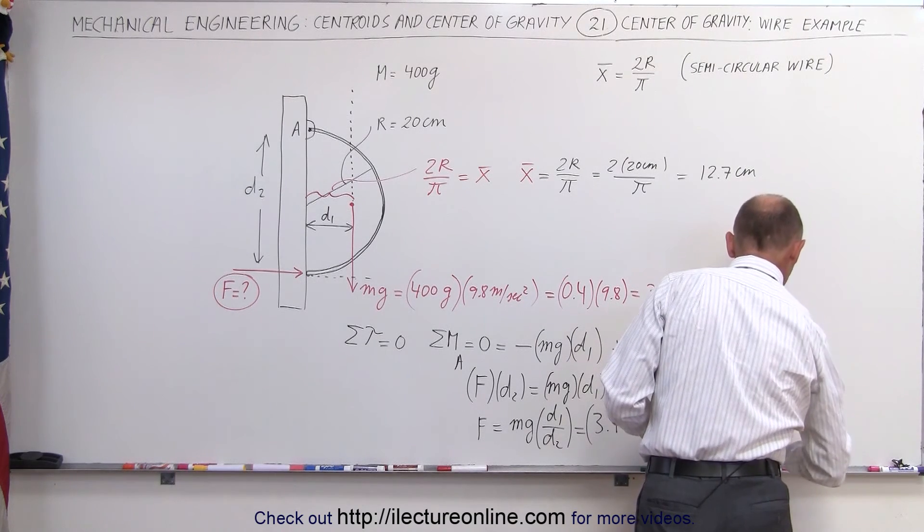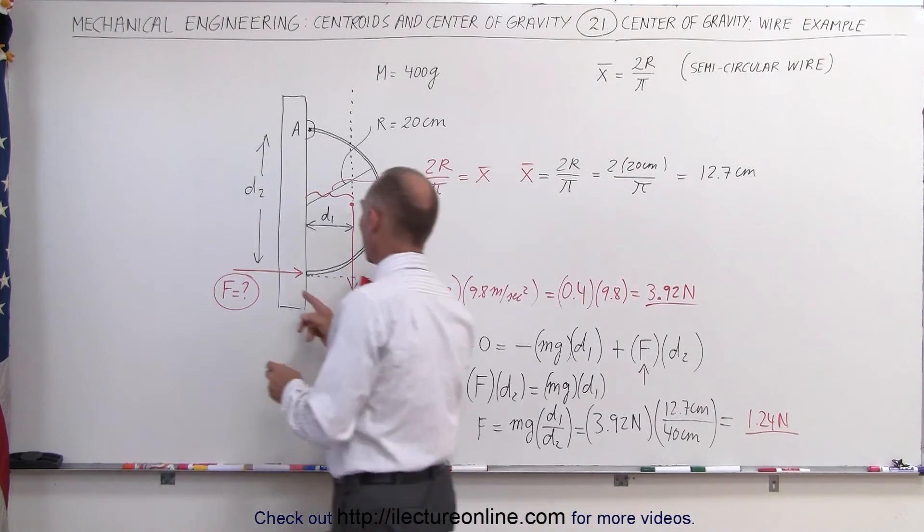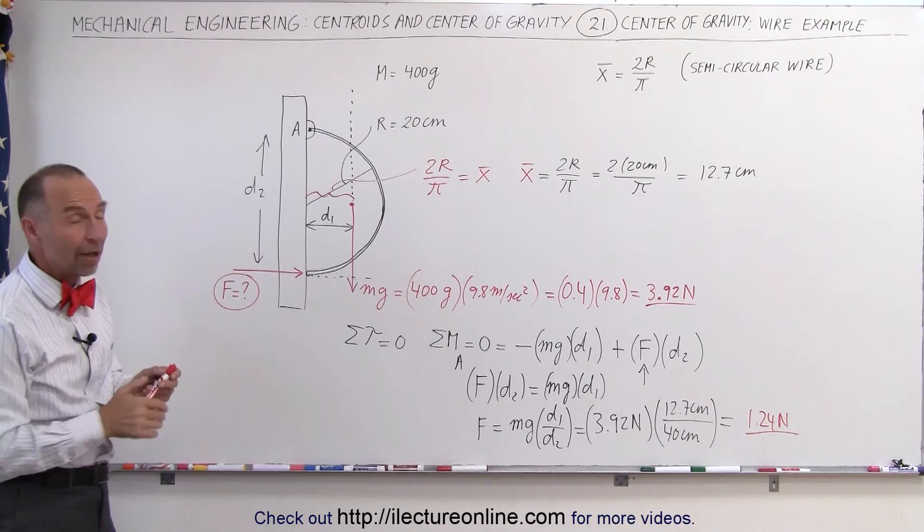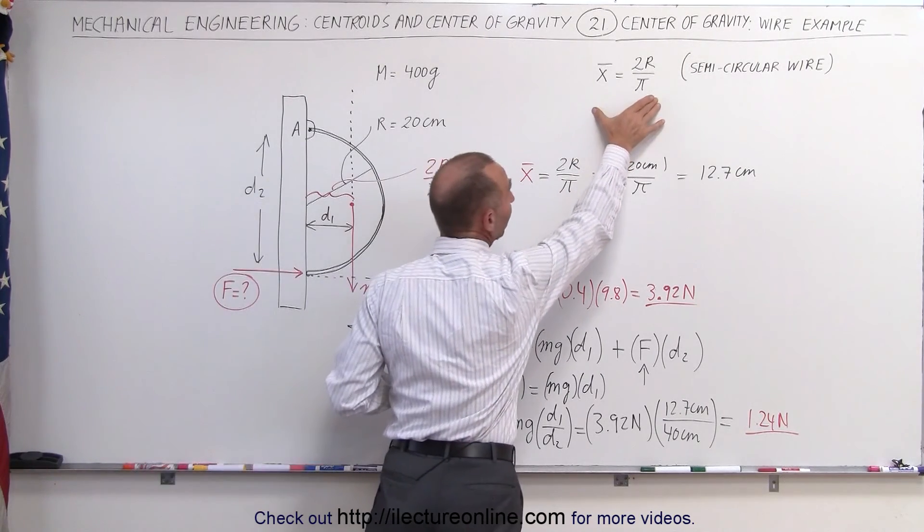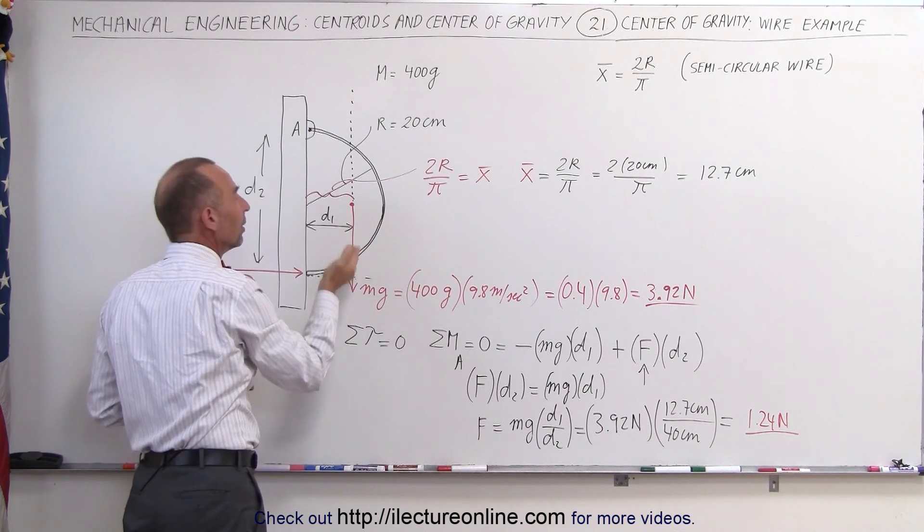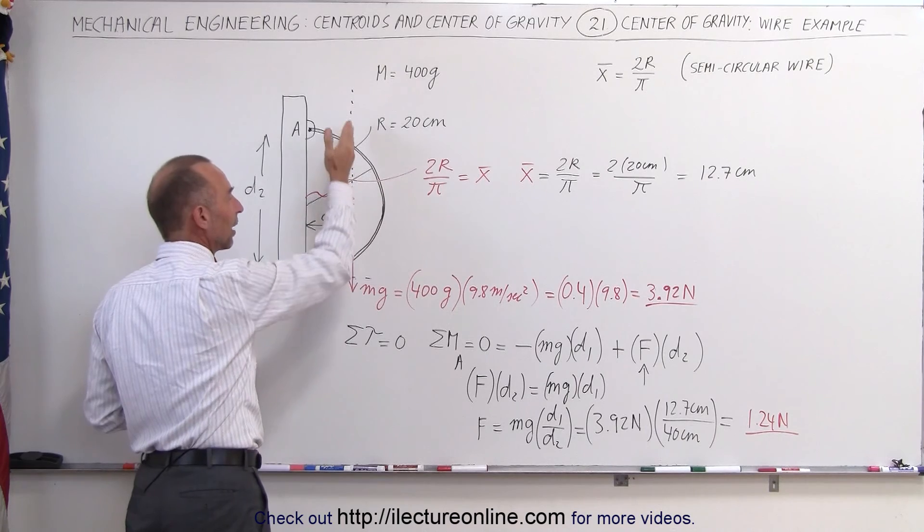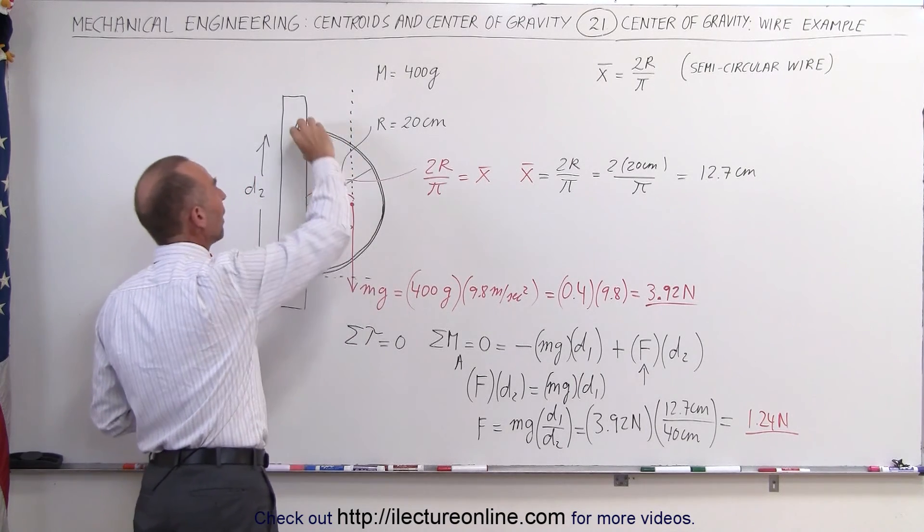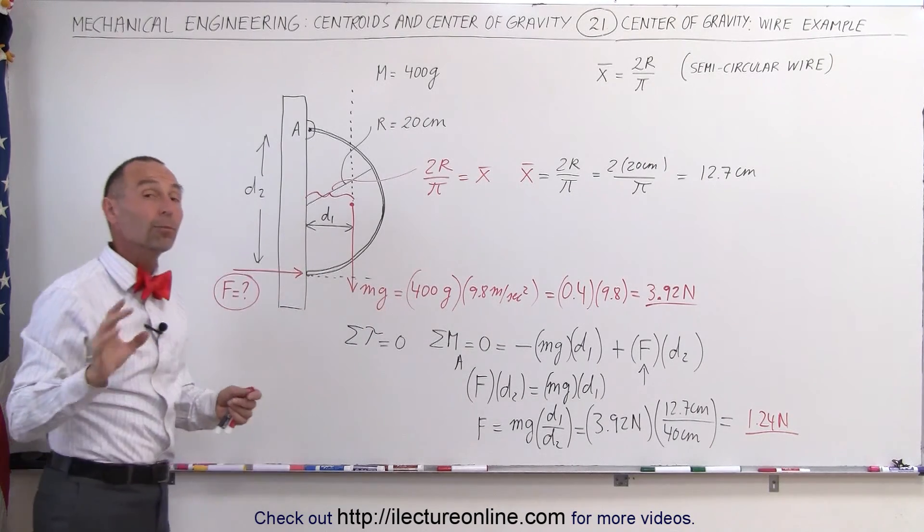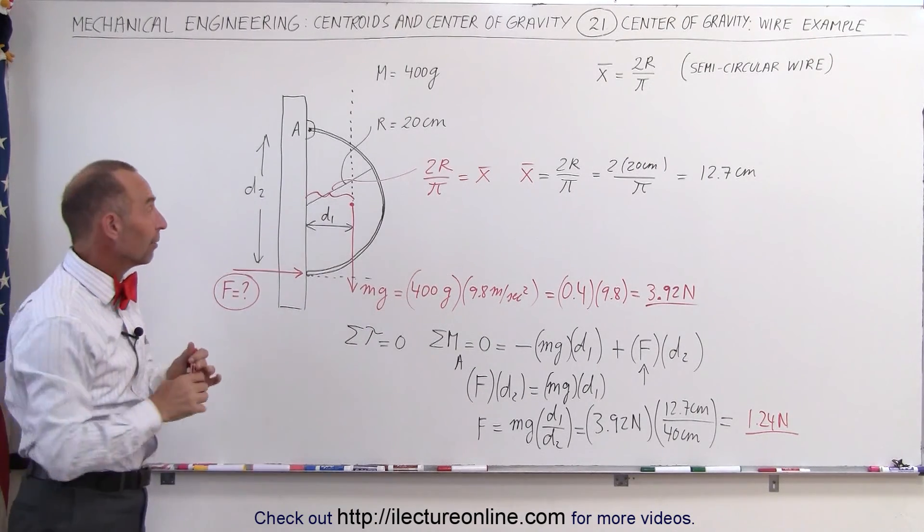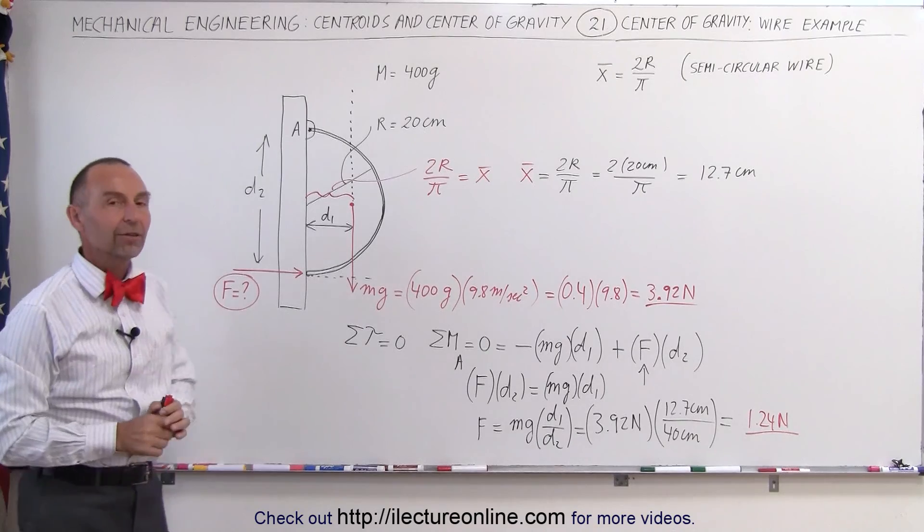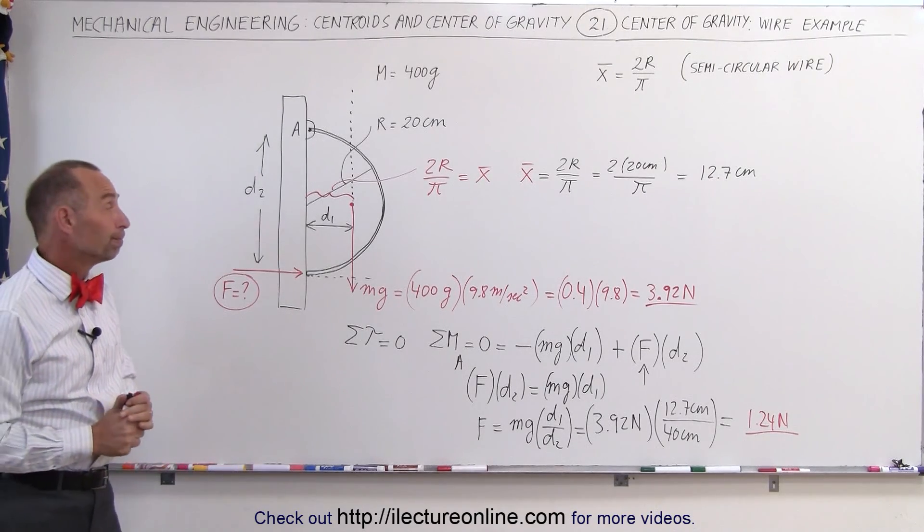1.24 newtons is the reactionary force of the post pushing back against wire, which is swiveling at point A right there. Notice how by finding, through maybe having a table of values or by calculating it, we can find the center of mass of the wire. We can then use the center mass to realize that that will cause a moment about point A, pushing the wire against the post. The post then pushes back against the wire. We then sum up the moment, because we know in a situation where everything is in equilibrium, all the moments added together add up to zero, which then allows us to find the force on the post. That's how we do this problem.